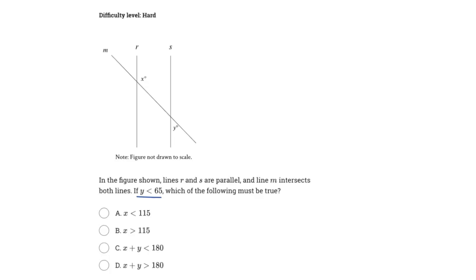So let's just go right through it. So it says X has to be less than 115. So X is this angle right here. And because it says Y has to be less than 65 and which of the following must be true for all values of Y, we could just plug in a random value for Y. So let's just call Y 64 degrees, right? Because that satisfies that equation.